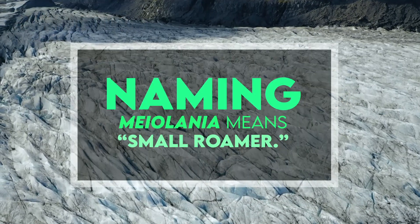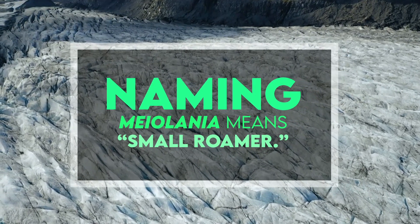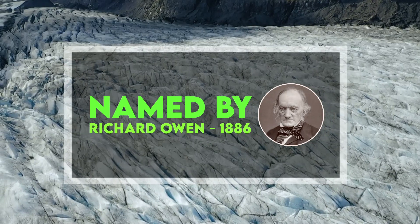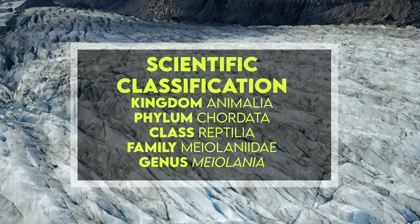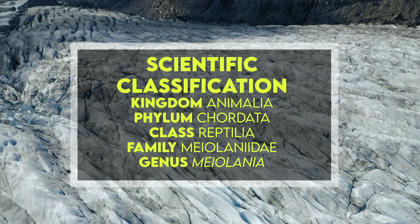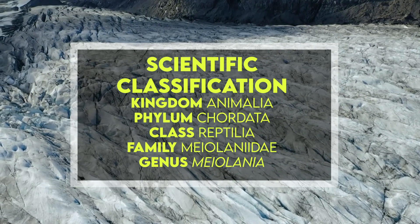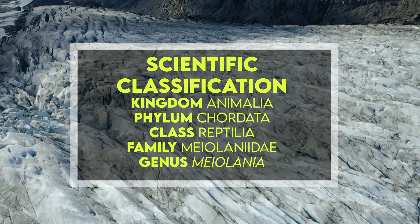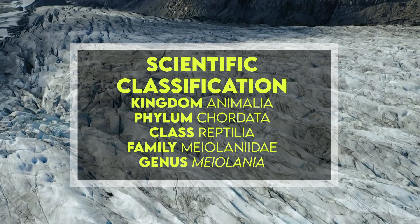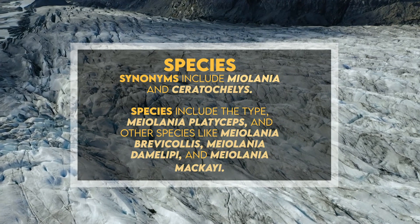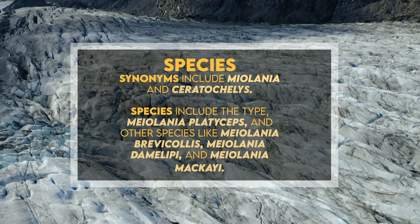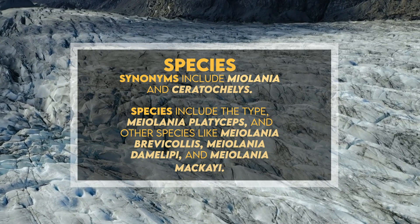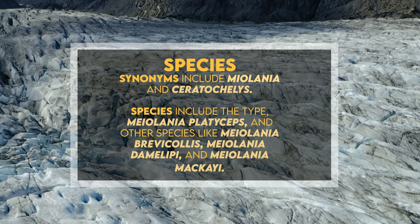Myolania means 'small roamer.' It was named by Richard Owen in 1886. It belongs to the kingdom Animalia, the phylum Chordata, the class Reptilia, the family Myolanidae, and the genus Myolania. Synonyms include Myolania and Ceratochelys. Species include the type species Myolania platyceps, and other species like Myolania rabicollis, damolipi, and makagi.